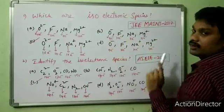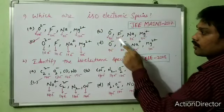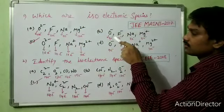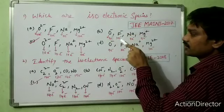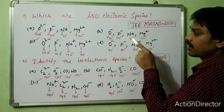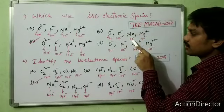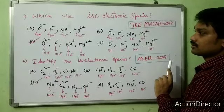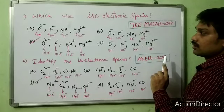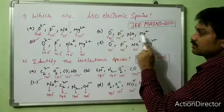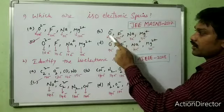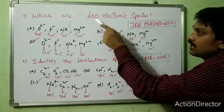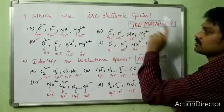Option B: O⁻ has 9 electrons, F⁻ has 10 electrons, sodium has 11 electrons, and Mg⁺ has 11 electrons. These species do not have the same number of electrons, so option B is not an isoelectronic species.